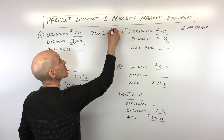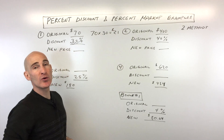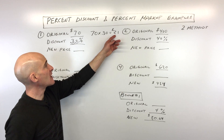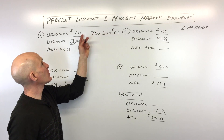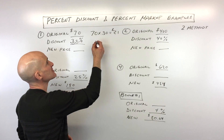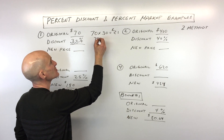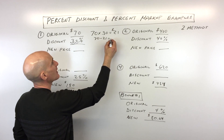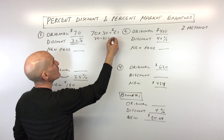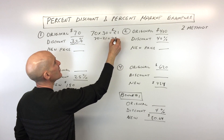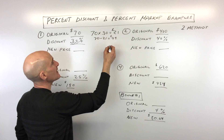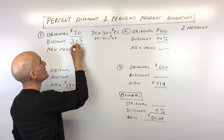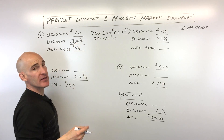That means you're saving $21. But that means you're going to have to take away the $21 from $70. So 70 minus 21 equals $49 — that's going to be your new price. That's one method.